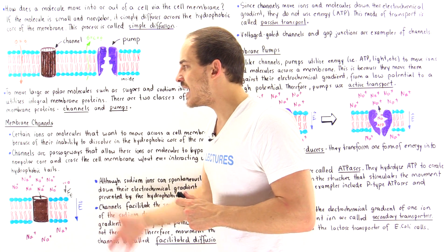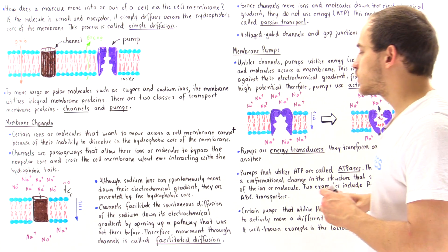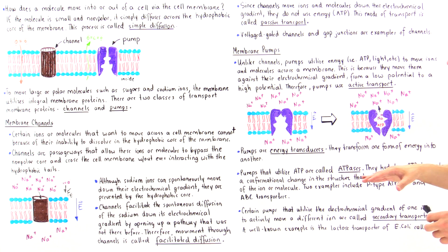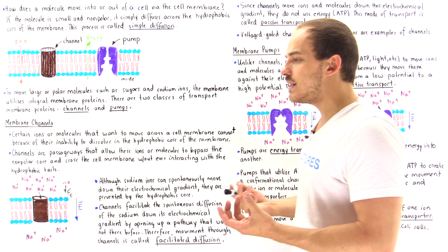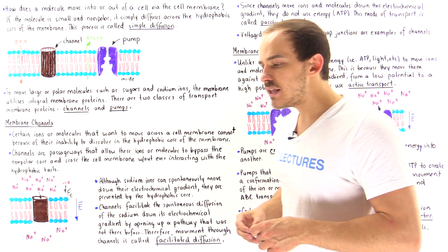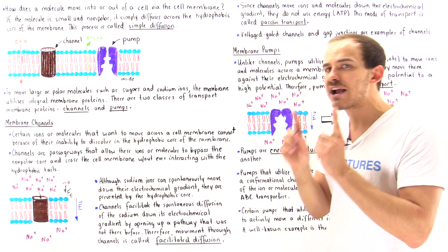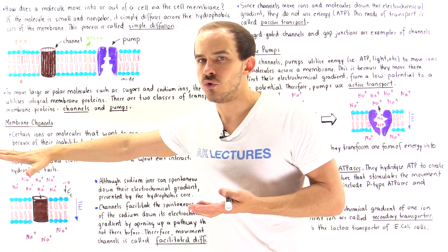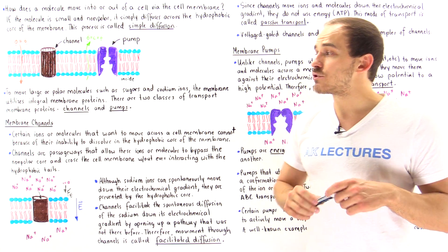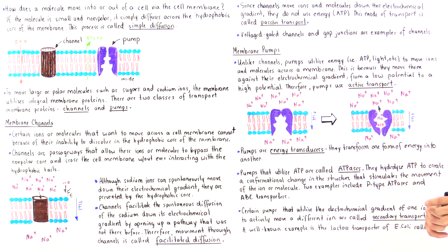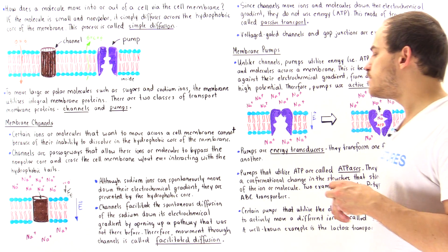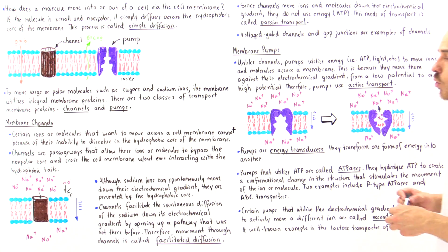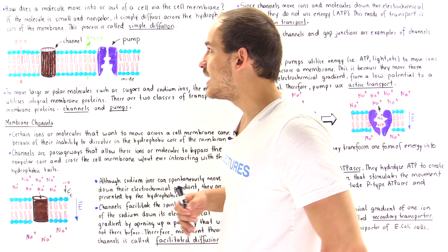Membrane pumps use ATP or energy to create and establish electrochemical gradients, and then membrane channels use those gradients to move molecules spontaneously from one side to the other down the electrochemical gradient. We have two types of pumps: ATPases and secondary transporters. A secondary transporter is a pump that doesn't use ATP directly — instead, it uses the electrochemical gradient of one molecule to move a second molecule against its electrochemical gradient. An example we'll focus on is the lactose transporter found in E. coli cells, and we also have many types of secondary transporters in our own body cells, as we'll see in a future lecture.